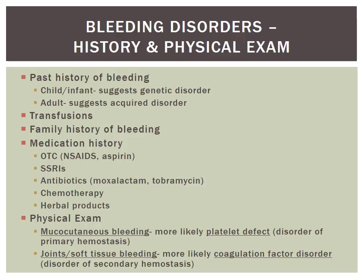On physical exam, it's important to look for the type of bleeding. Bleeding is divided into two types: mucocutaneous bleeding — of the skin or mucous membranes — which is more likely related to platelet issues and is a disorder of primary hemostasis. Bleeding of joints or soft tissues is more likely a coagulation factor issue, which is a disorder of secondary hemostasis.